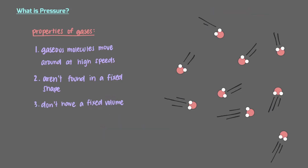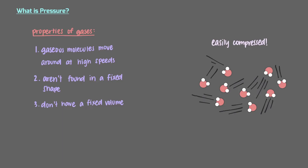Gases also don't have a fixed volume. This is because gaseous molecules are relatively spread out, so they can be easily compressed to occupy a smaller volume. This then increases the pressure exerted by the gas. But what is pressure? Let's investigate.